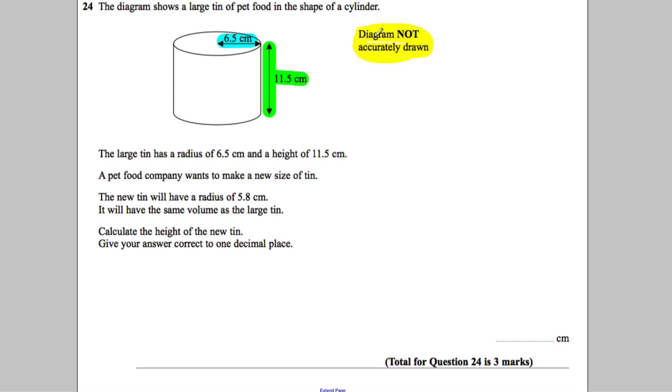The large tin has a radius of 6.5 cm and a height of 11.5 cm. The pet food company wants to make a new size tin. The new tin will have a radius of 5.8 cm and will have the same volume as the large tin.